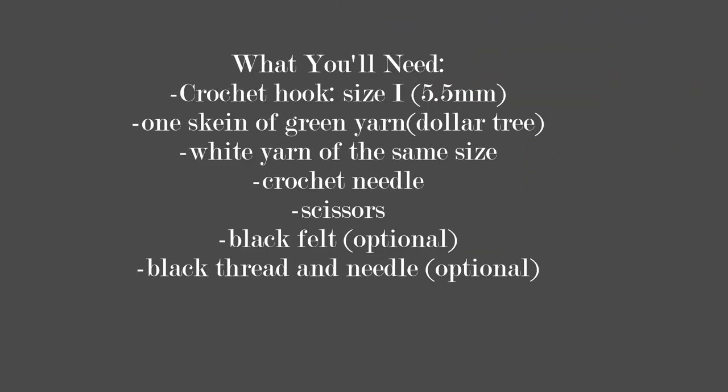For supplies, you're going to need your crochet hook, which is a size I, or 5.5 millimeters. For yarn, you're just going to need one skein of Dollar Tree yarn, whatever color, green, whatever color you want it to be. That's going to be the color of the base.